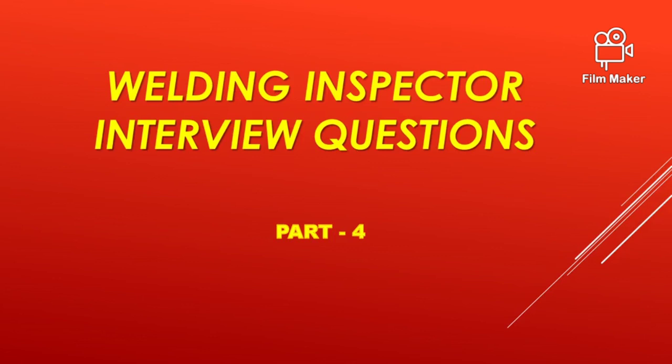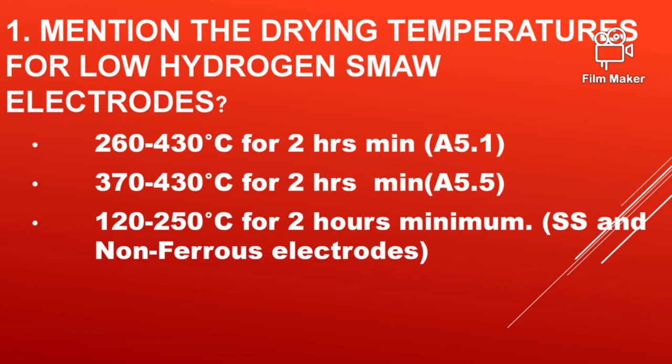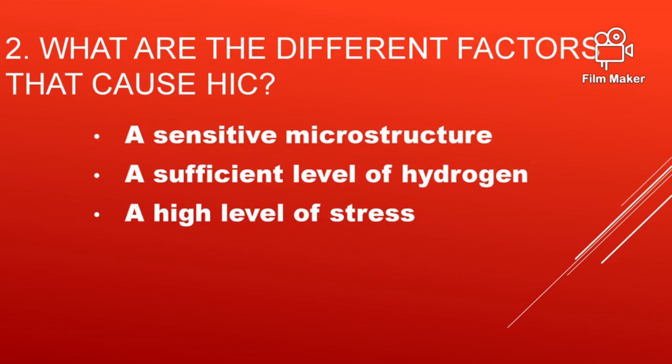First question: mention the drying temperature for low hydrogen SMAW electrodes. That is 260 to 430 degrees centigrade for SFA number 5.1, and 370 to 430 degrees centigrade for SFA number 5.5 electrodes — both are for carbon steel — and 120 to 250 degrees centigrade for non-ferrous electrodes.